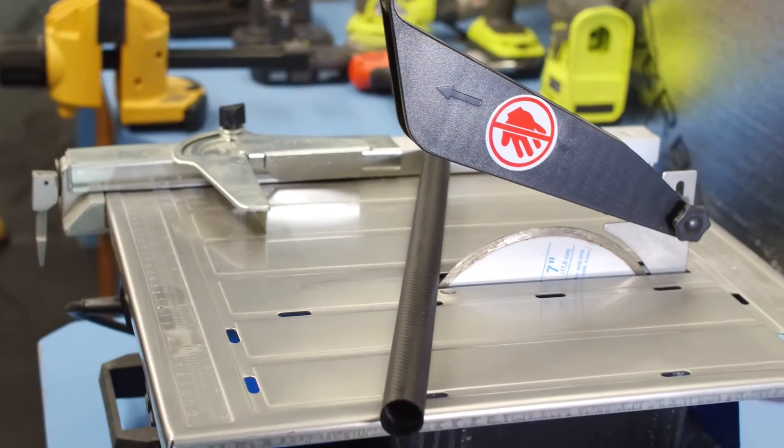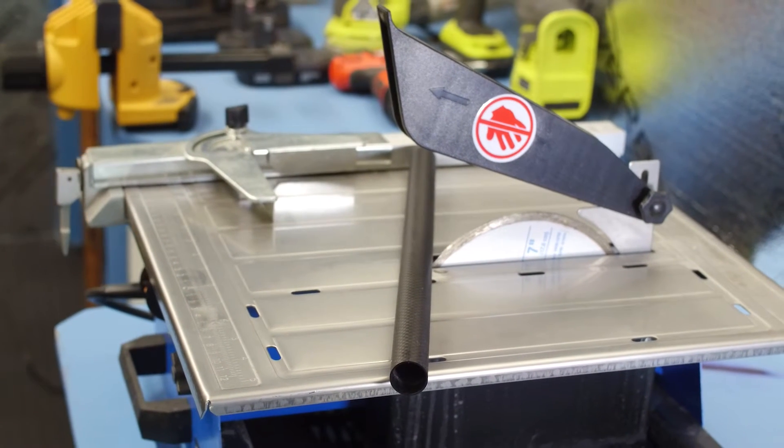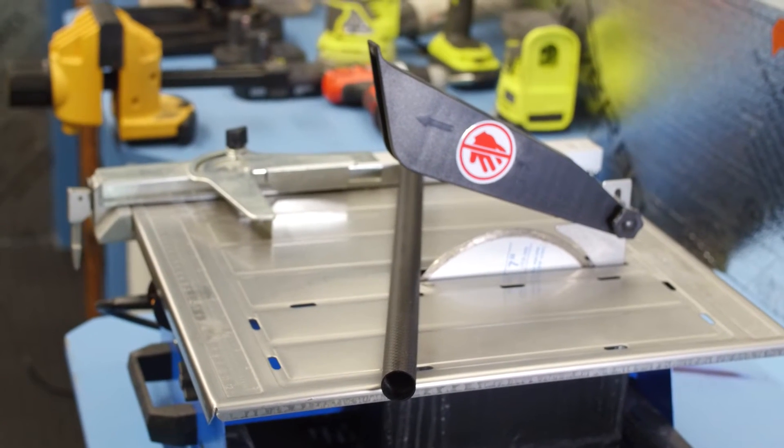A more effective way to cleanly cut carbon fiber is using a tile saw or a wet saw, often used for cutting ceramic tile.